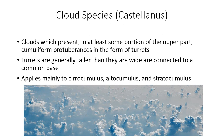Now we move into cloud species. One example is castellanus — clouds which present cumuliform protuberances in the form of castle turrets in at least some portion of the upper part. These turrets are generally taller than they are wide and are connected to a common base. The castellanus species applies mainly to cirrocumulus, altocumulus, and stratocumulus. Altocumulus castellanus indicates a very unstable atmosphere — when you see these little mini turrets resembling castle turrets, it means an unstable atmosphere. The bottom image shows cumulus developing those turrets from small vertical pockets of rising air motion.